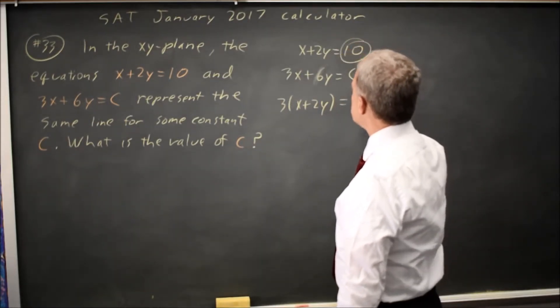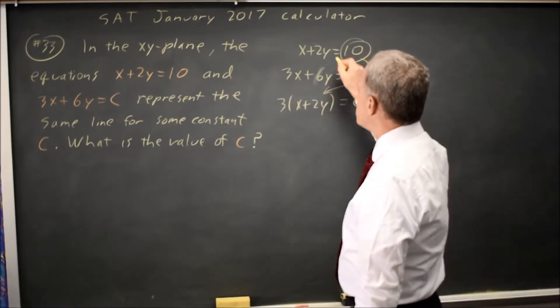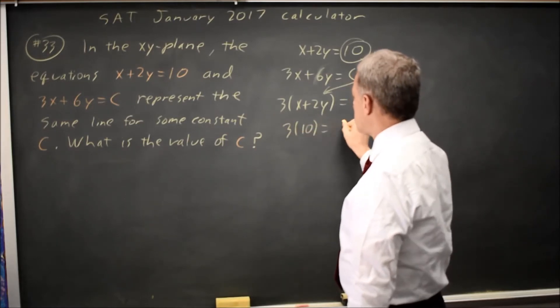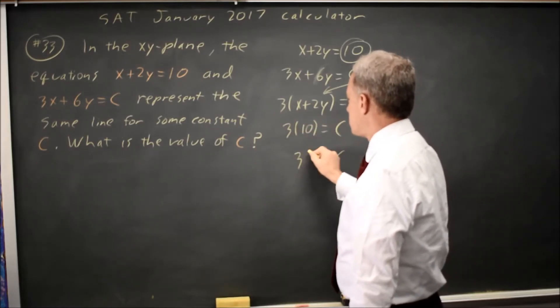I can substitute the 10 in for x plus 2y because 10 is equal to x plus 2y, so 3 times 10 equals C. C equals 30.